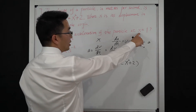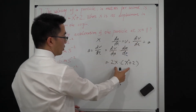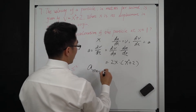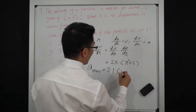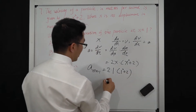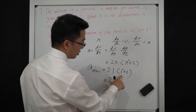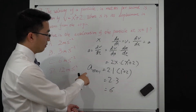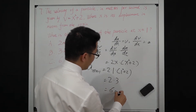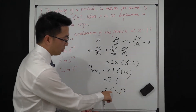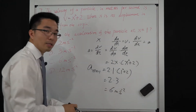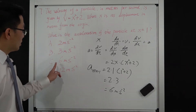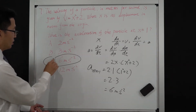We substitute x equal to 1 into this equation: a at x equals 1 is equal to 2 times 1 times (1² + 2), which equals 2 times 3, equal to 6. The acceleration is 6 meters per second squared. So the answer is C.